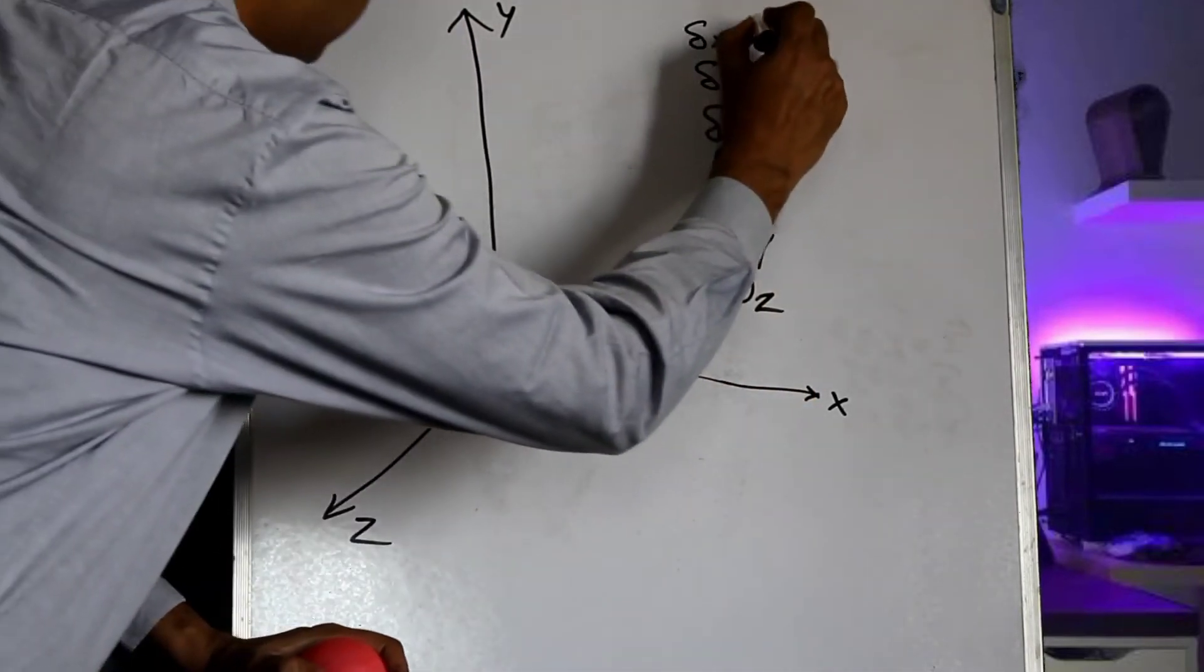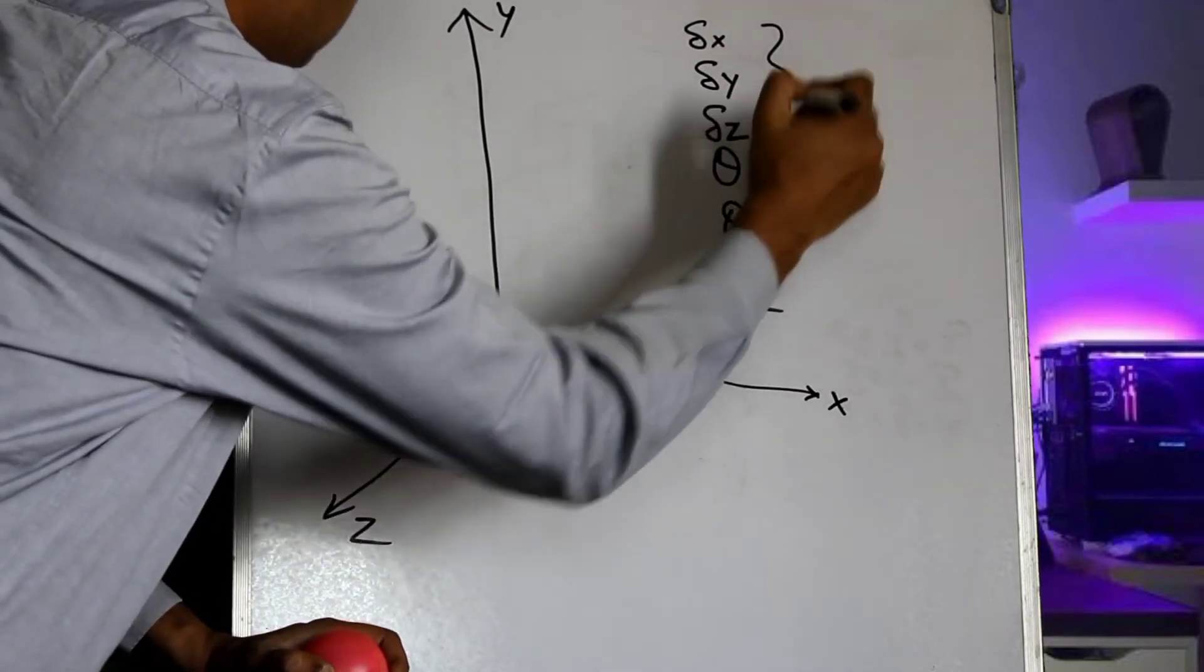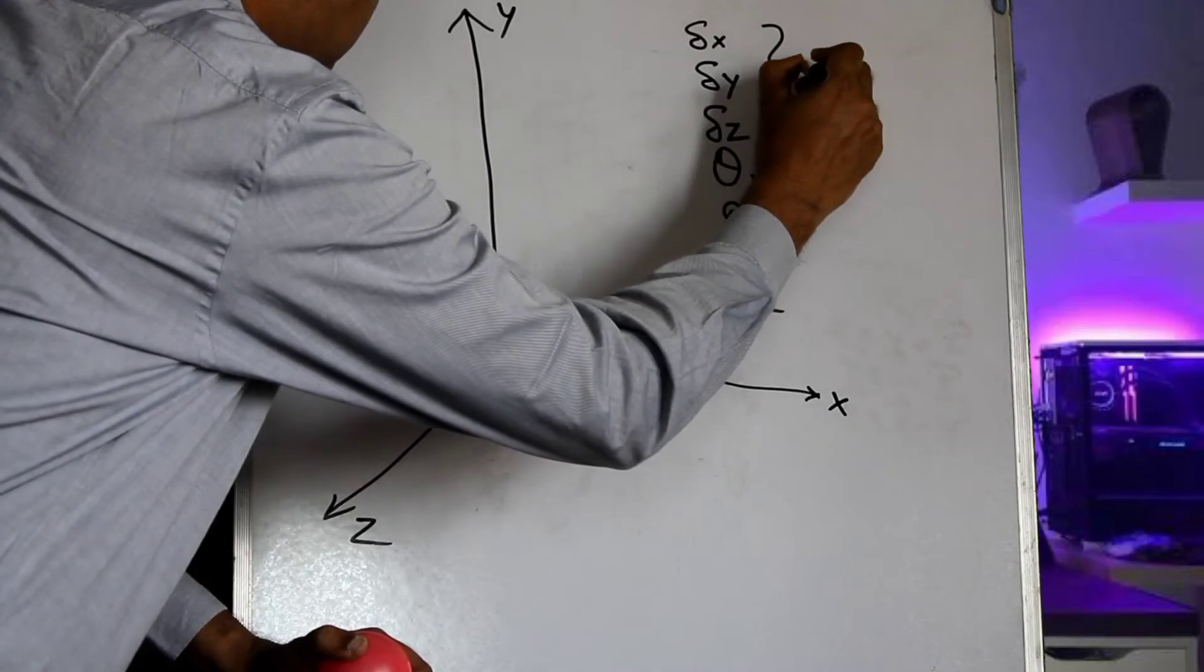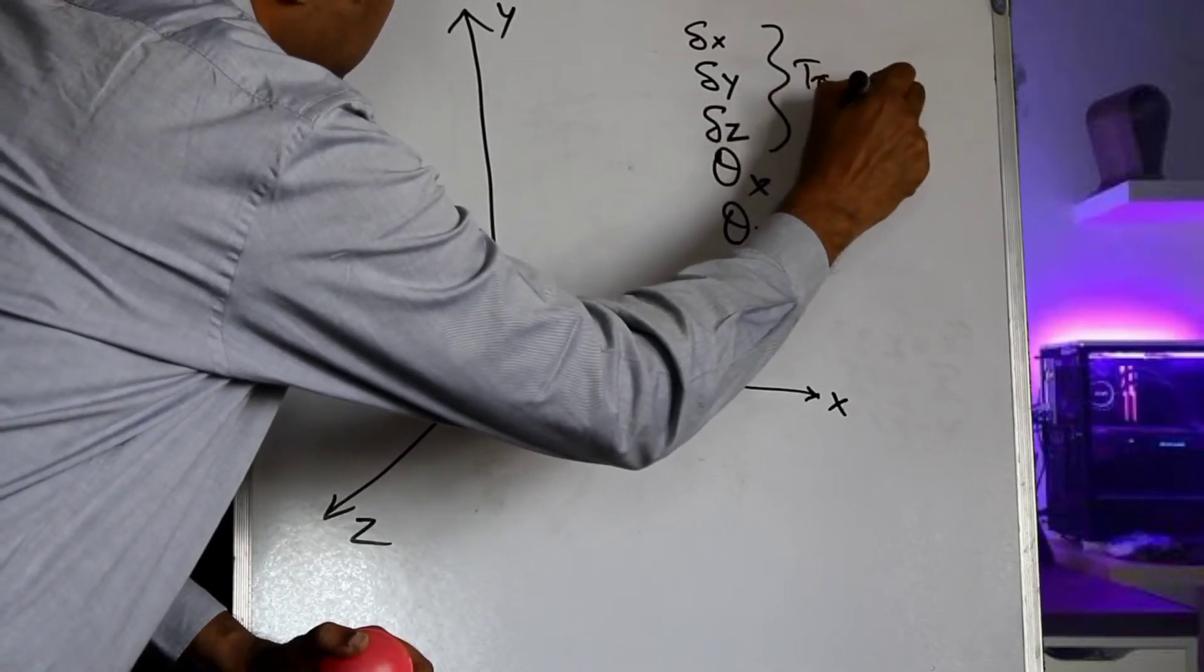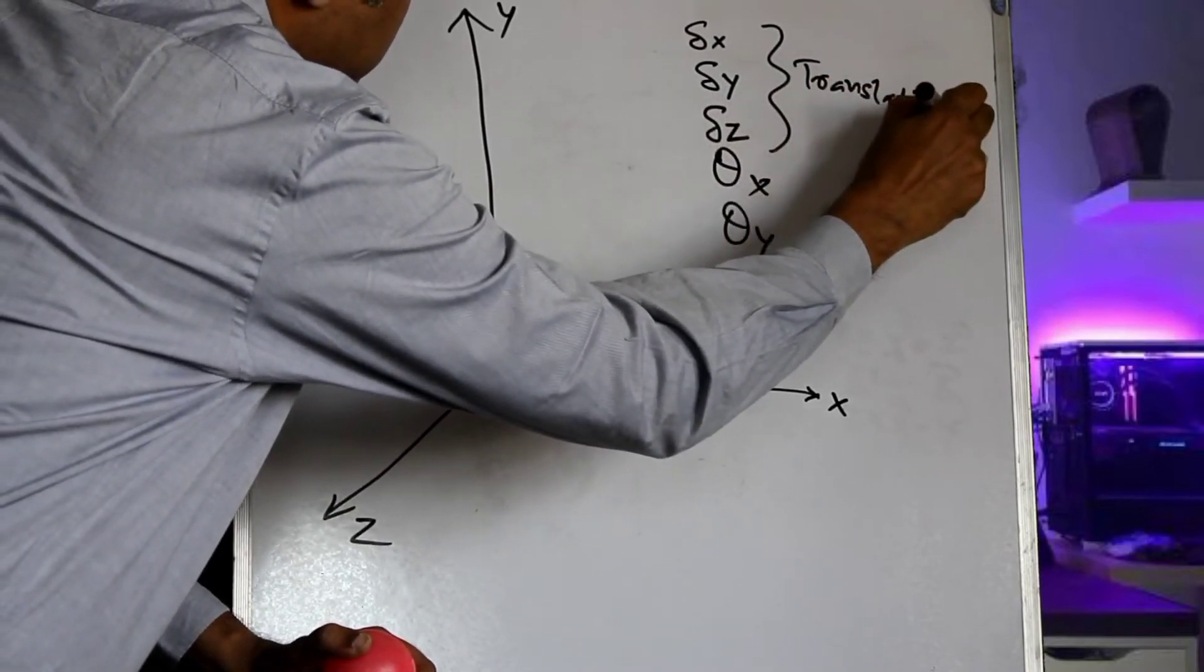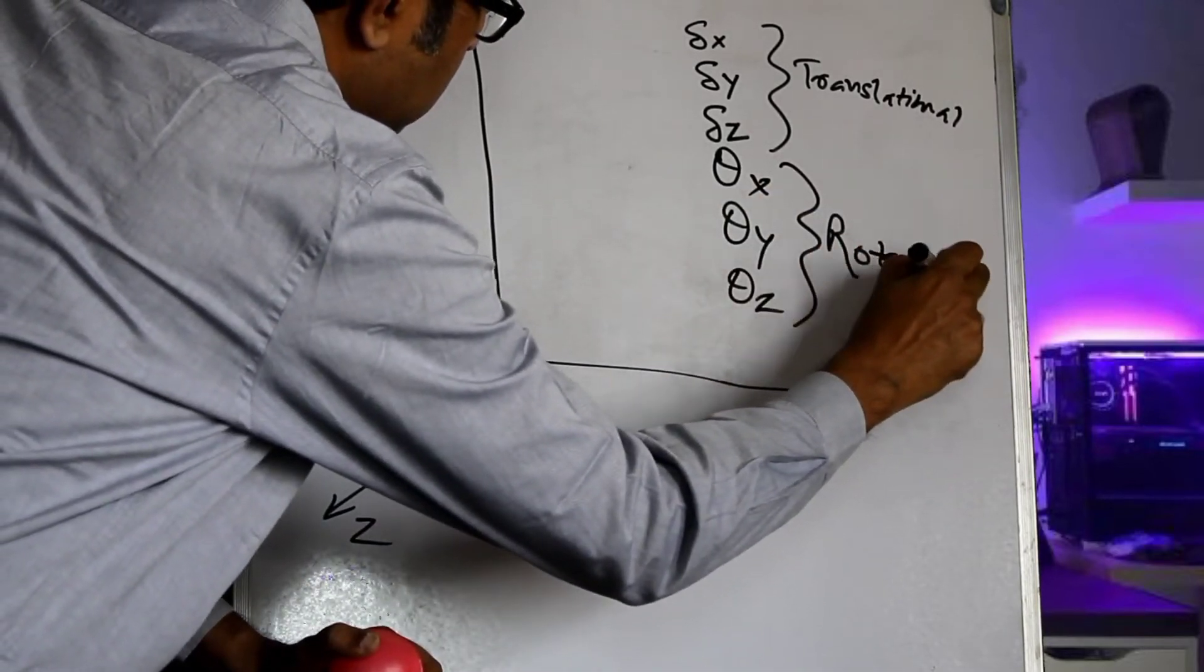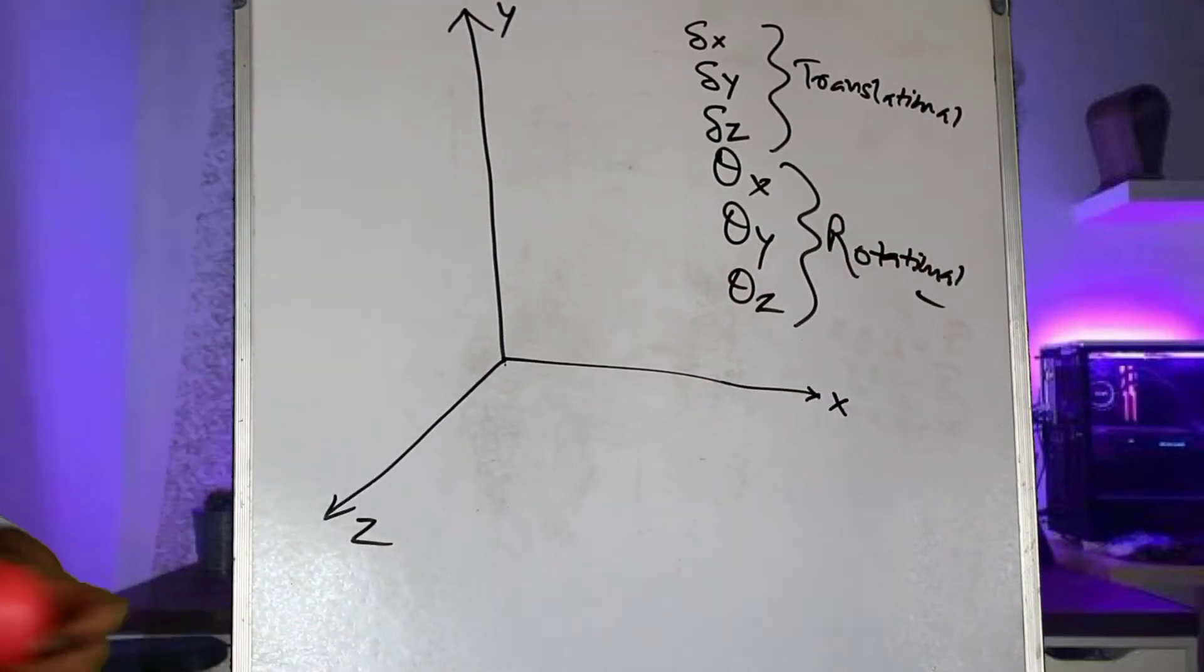So these three motions would be called the translational motions. And these three motions would be called the rotational motions. So there are six basic components of motion in space. And any motion of the ball in space can be represented as a combination of these basic components.